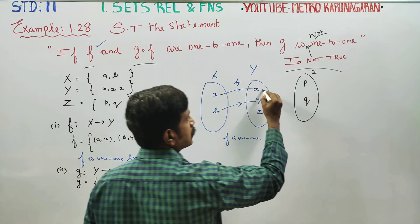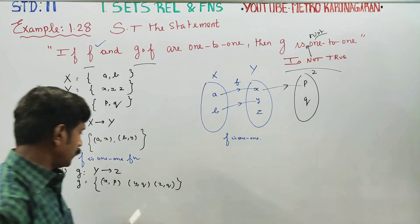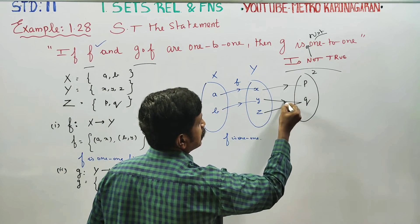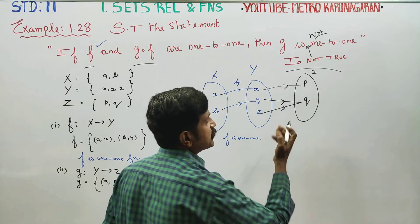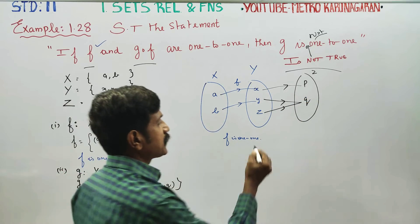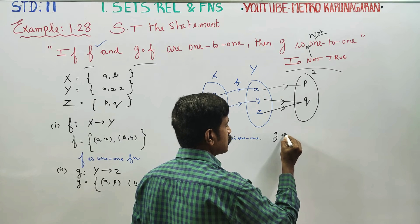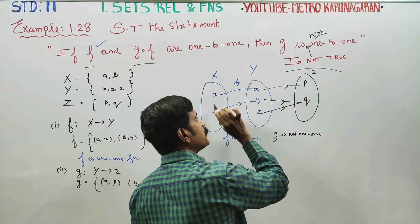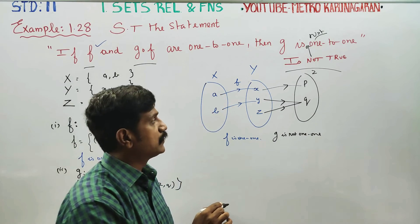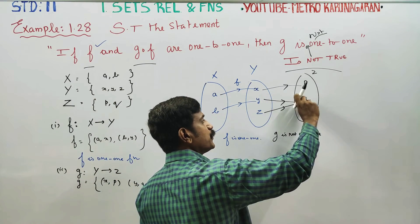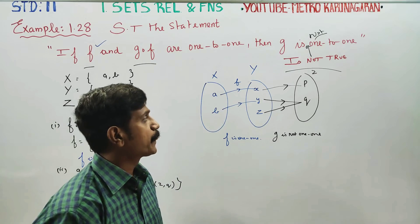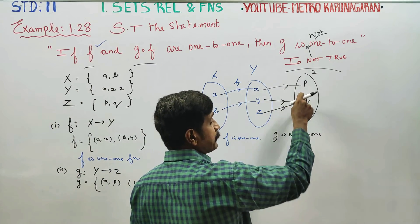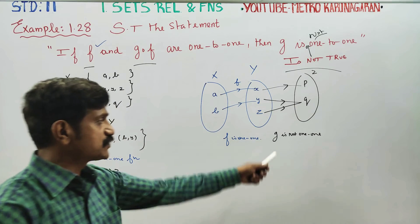x is mapped to p. y and z are both mapped to q. This means two distinct elements y and z map to the same image q — that is a double arrow going to the same element. Therefore g is not a 1-to-1 function. Distinct elements must have distinct images, but here that condition is violated.